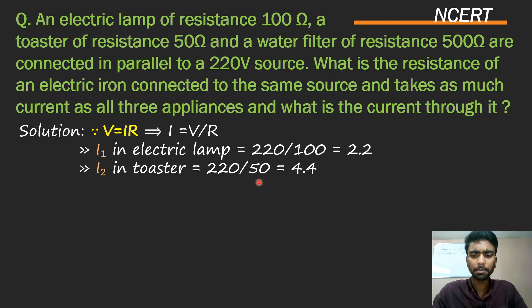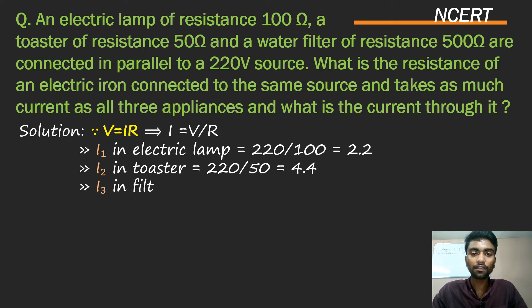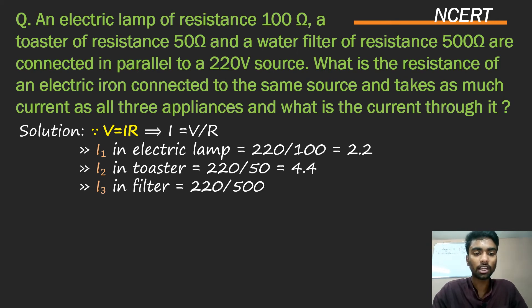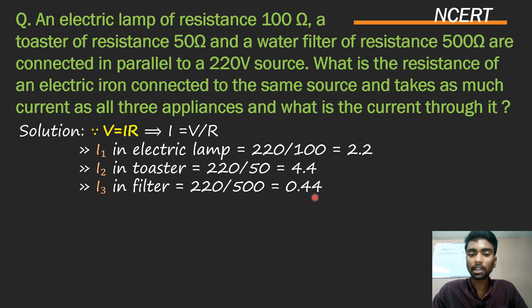4.4 ampere. Ab i3 water filter ke liye: i3 = V by R = 220 divided by 500, kyunki filter ki resistance 500 ohm hai.